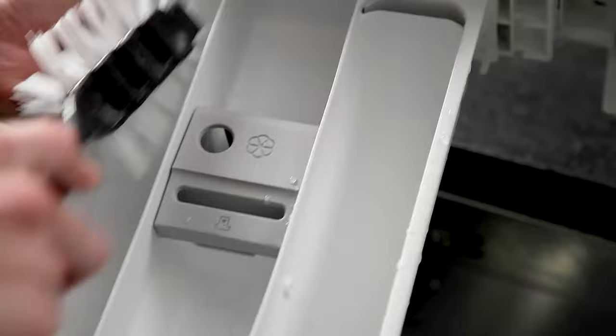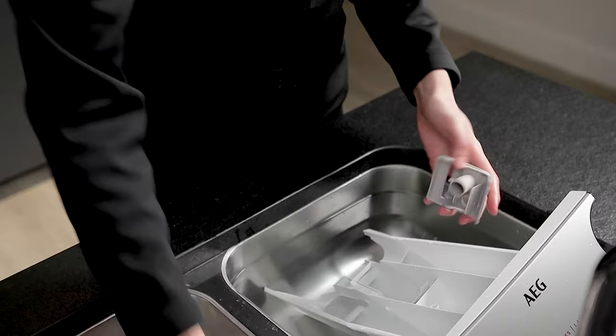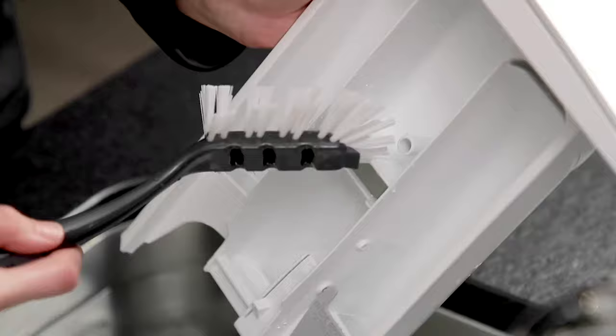When cleaning, the fabric conditioner lid should also be removed and cleaned thoroughly, along with the siphon tube. This will ensure that the fabric conditioner can be dispensed correctly.